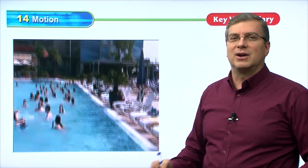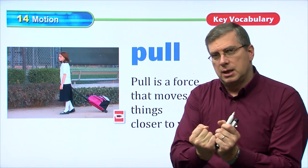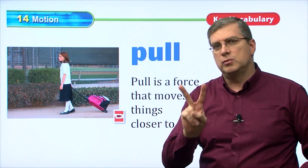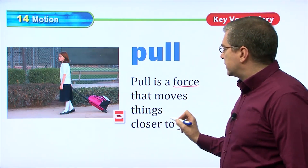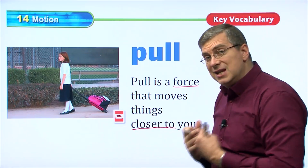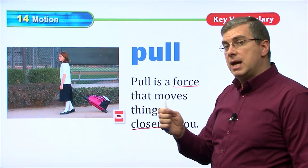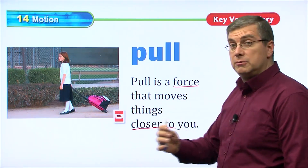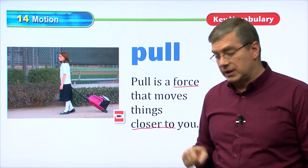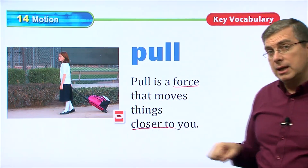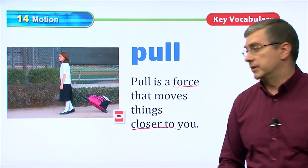Gravity is always there, always pulling us to the earth and keeping us on the ground. Without gravity, we would just float off — that would be very dangerous and very strange. Now we've talked about pull a little bit. Gravity pulls us to the ground. Pull and push are the two major forces. Pull is a force that moves things closer to you. If I take this pen and pull it to me, I'm bringing it closer. We can pull something along to bring it from here to over there.